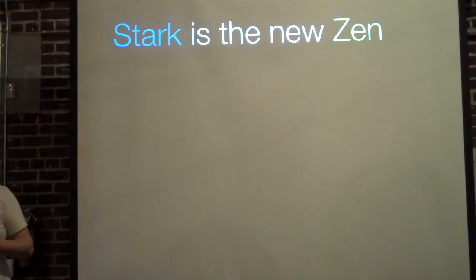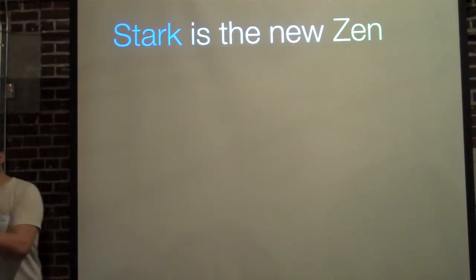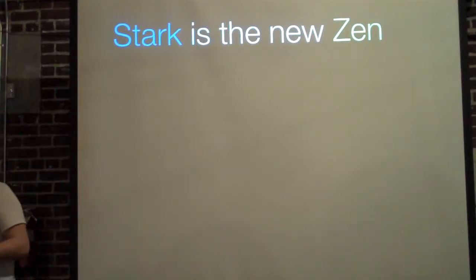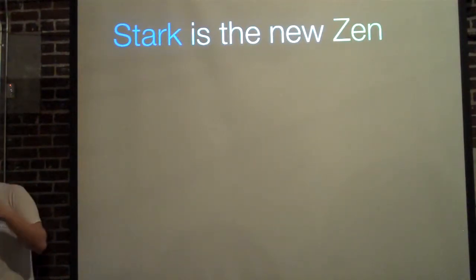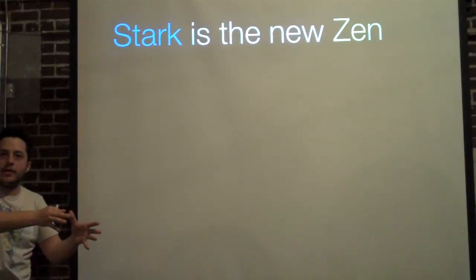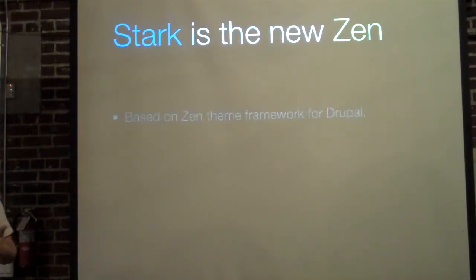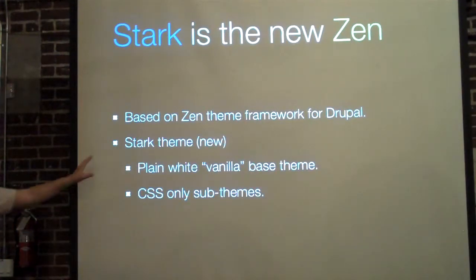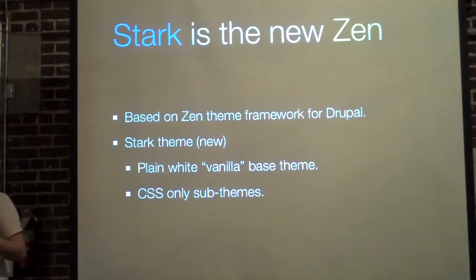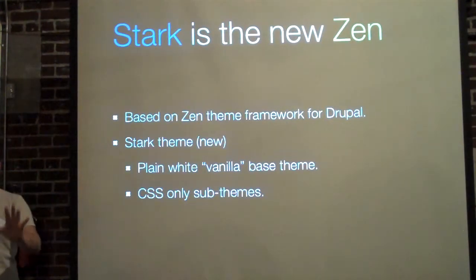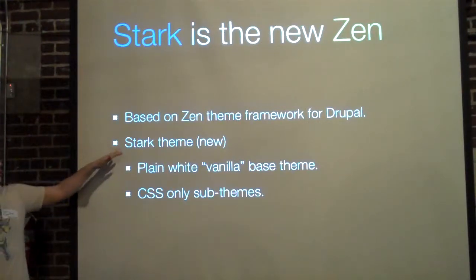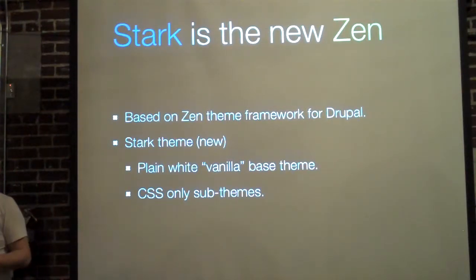Stark is the new Zen. For those that don't know, Zen is a plain white vanilla kind of base theme that you can build your themes on top of. It has a lot of the markup ready for you and the CSS is pretty plain and basic. Stark is the new built-in Drupal 7 plain white vanilla theme, and it allows you to create CSS-only sub-themes. So if you don't want to touch any PHP or templates, and you just want to add your colors and graphics, Stark lets you build right on top of Drupal without installing anything external.